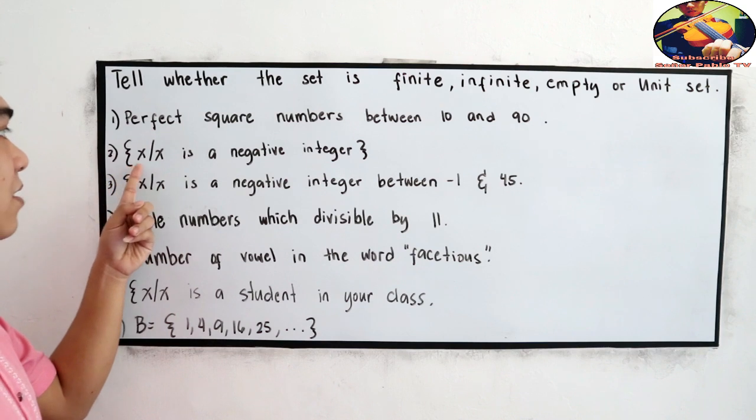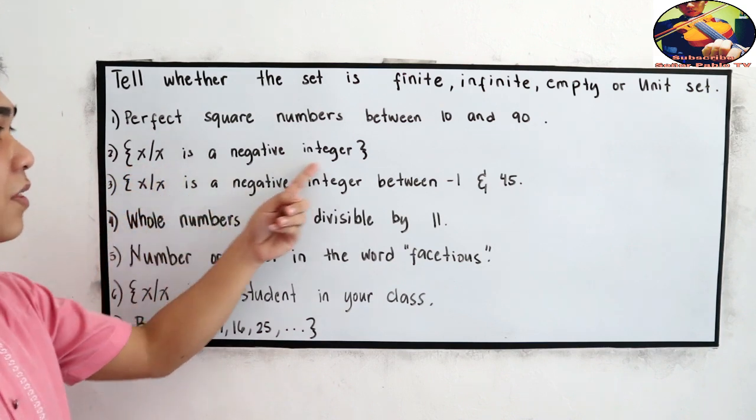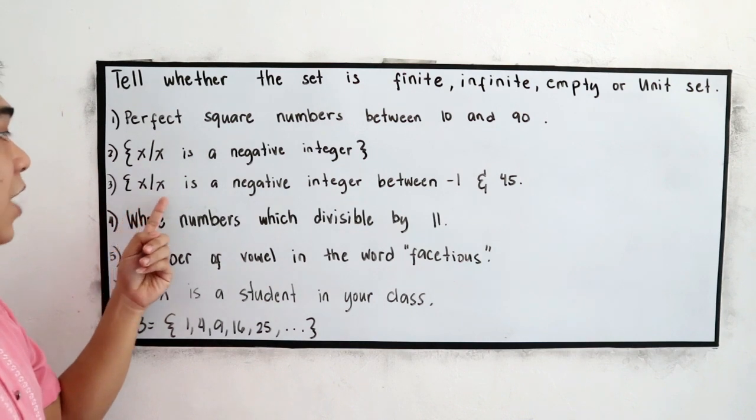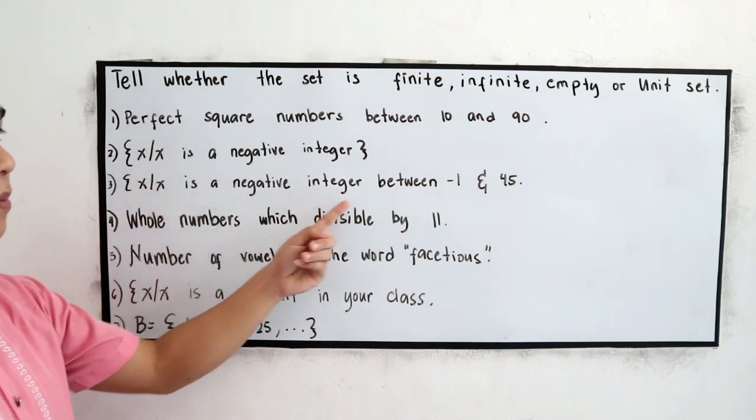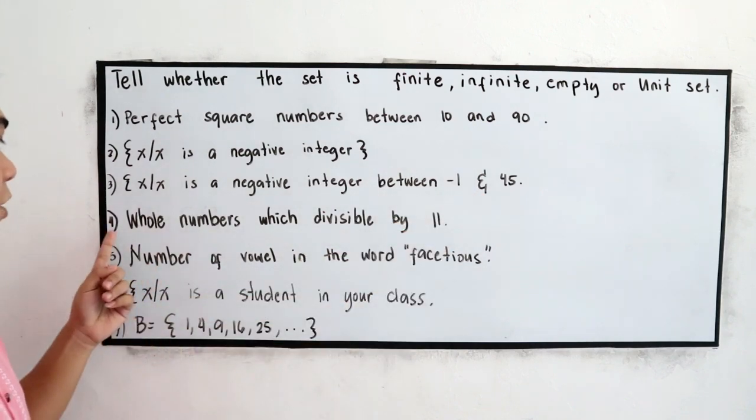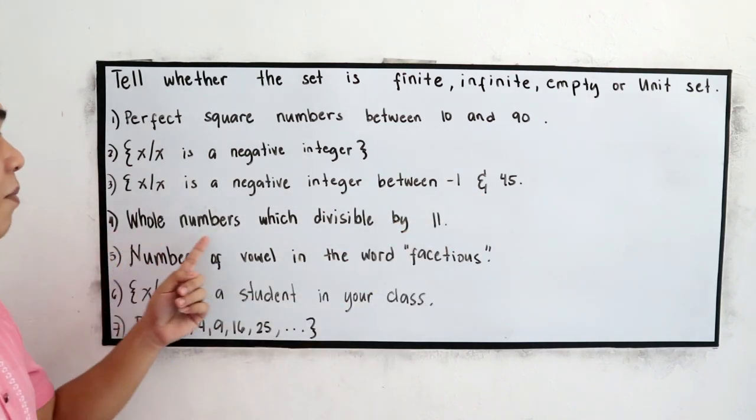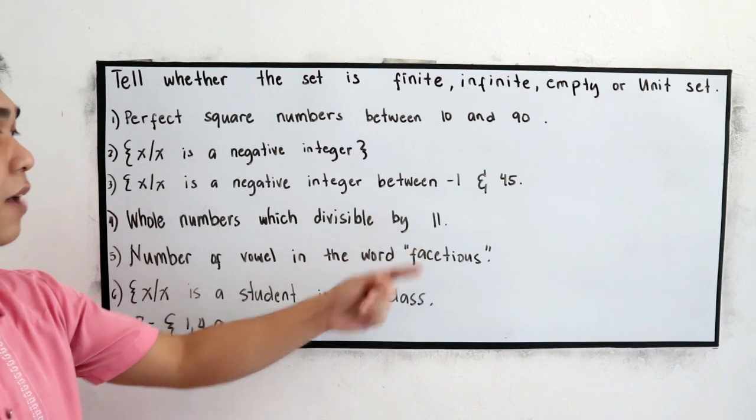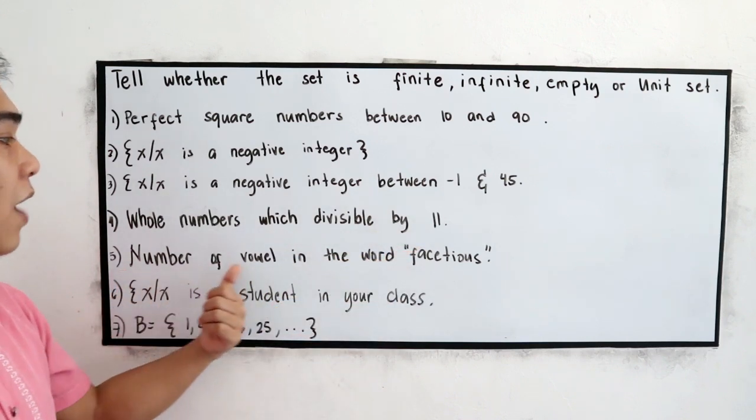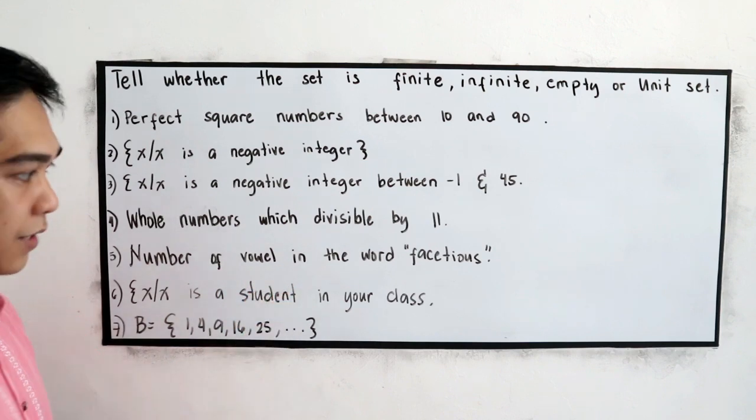Number two, x such that x is a negative integer. Number three, x such that x is a negative integer between negative 1 and 45. Number four, whole numbers which divisible by 11. Number five, number of vowels in the word jocetious.